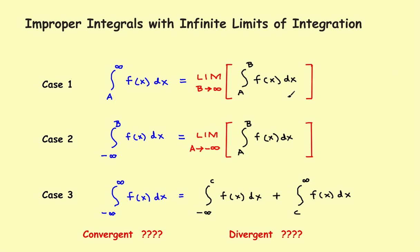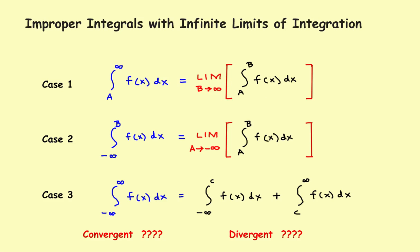Now, looking back at our rules, we've done the inside part. To find the answer to the full problem — the integral all the way out to infinity — we just take the limit as b approaches infinity of the result from step one. So we need the limit as b approaches infinity of the inverse tangent of b.